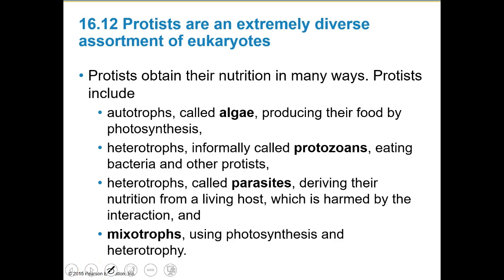Protists obtain their nutrients in many ways. We've got autotrophs, or self-nourishers like algae, which make food by photosynthesis. We have heterotrophs like protozoans that eat things, and also parasitic heterotrophs that get nutrition from a host. Then we have mixotrophs, which can utilize both photosynthesis and heterotrophy.